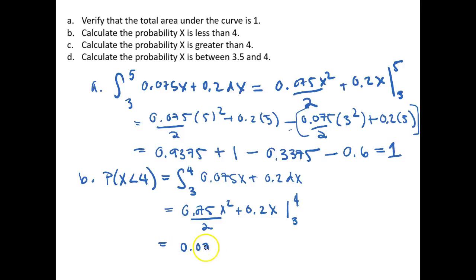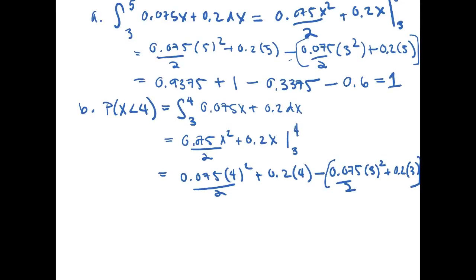This is equal to 0.075x squared over 2 plus 0.2 times 4 minus 0.075 over 2, 3 squared plus, and again put these in brackets, plus 0.2 times 3.